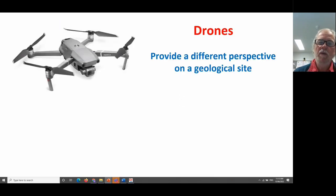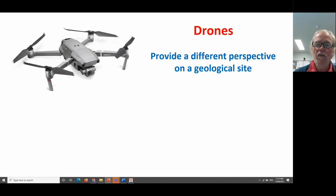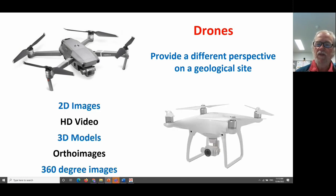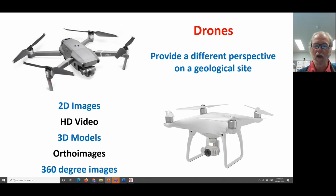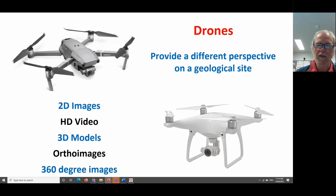How can we do that? Like everyone, we use drones. Drones provide a different perspective on a geological site — no longer are we restricted to our own personal viewpoint, which enables us to see much greater complexity and much greater information. We have a range of different options: standard two-dimensional images, high-definition video, 2D images to make 3D models from which we can create high resolution ortho images, and also 360-degree images.